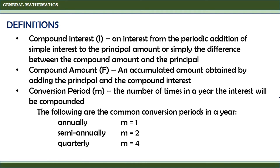Quarterly, M equals 4, meaning the interest is compounded every 3 months or 4 times a year. Monthly, M equals 12, meaning the interest is compounded 12 times a year.